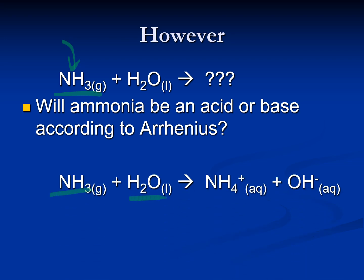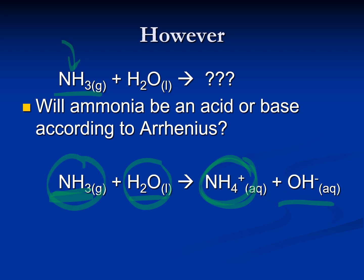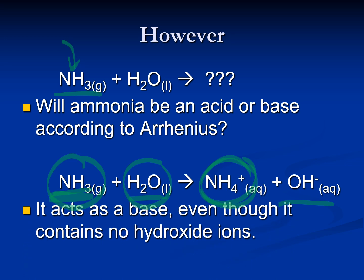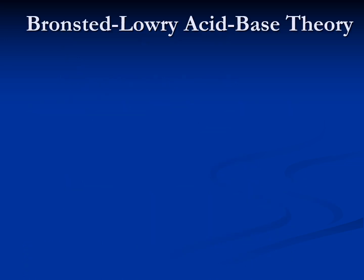When you put ammonia into water, you get ammonium and hydroxide ions. So this is going to cause the pH to be higher, making the solution basic. However, there are no hydroxide ions in ammonia — they're not coming from the ammonia. So even though it can act as a base, it can act as a base even though there are no hydroxide ions in it.